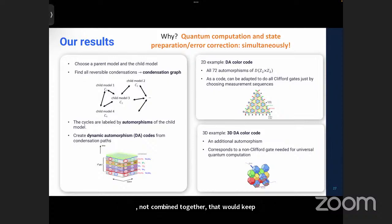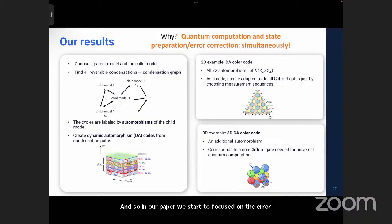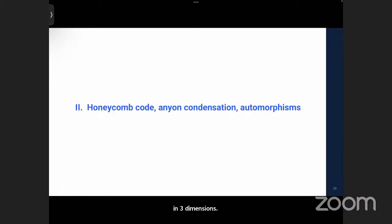In our paper, we focused on the error-correcting side, showing that these are error-correcting codes. Together, the 2D and 3D constructions would give a universal gate set, but you would need to combine them. That's sort of where we stopped, because we achieved everything we wanted for quantum computing. Now I'll go into more depth on how we obtain the Honeycomb code from anyon condensation and why the automorphism occurs in the Honeycomb code, since this is the simplest example.